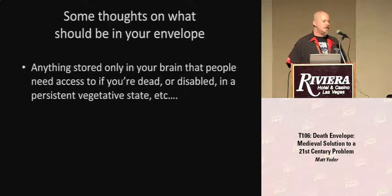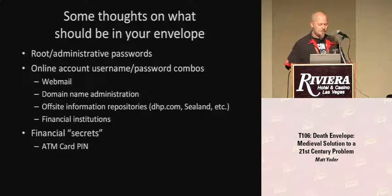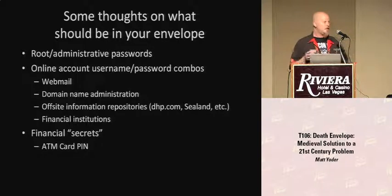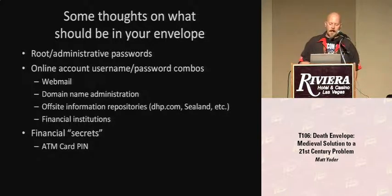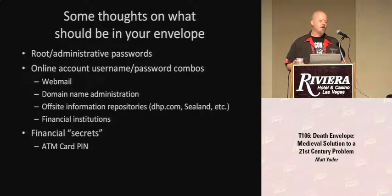Anything being carried around in your brain right now that someone needs after you die should be in an envelope. Root or administrative passwords definitely should be in an envelope. Online accounts for webmail, domain name administration — like if you have a GoDaddy account — or your financial information: these are important and should be available. Financial secrets should probably be in there as well. There are legal remedies to get access to someone's bank account in the event of death, but there's a certain period where it's much easier if you can access it as that person once they've died.